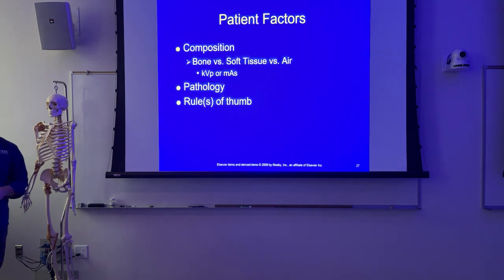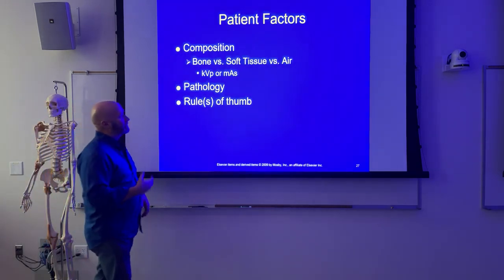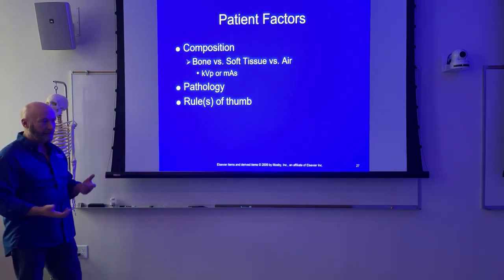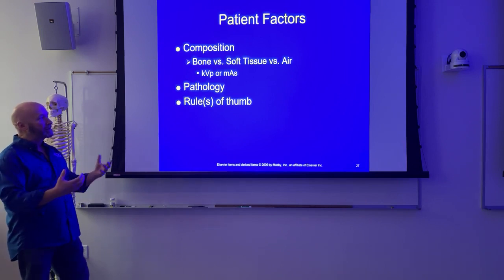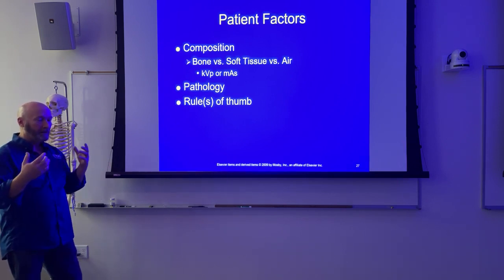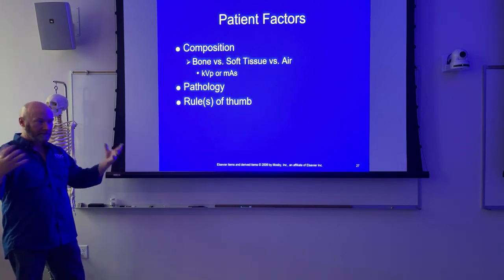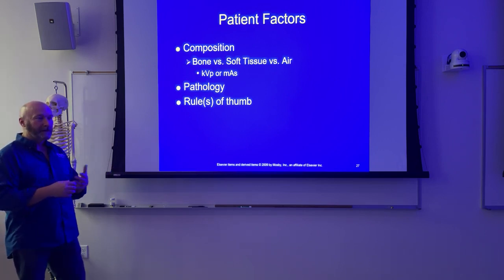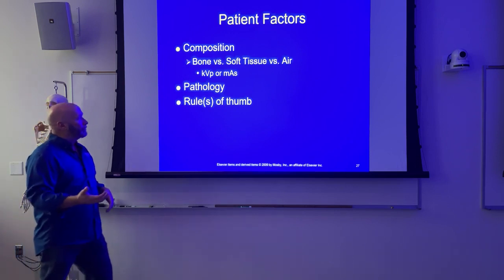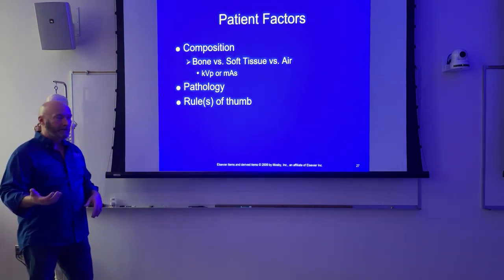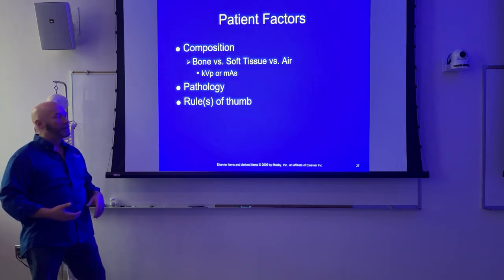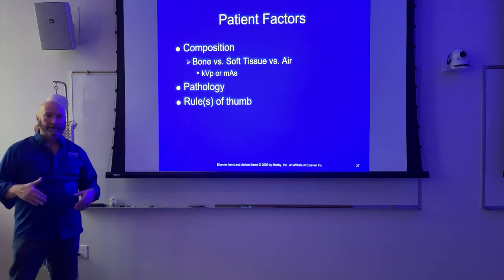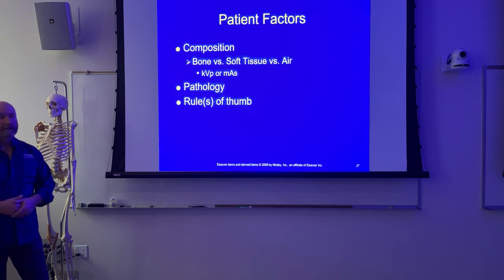If we have an increase in bone, we might want to increase KVP; but if we have an increase in soft tissue, we probably want to increase mAs. If we have an increase in air, on the other hand, we might need to decrease our technique. Increase KVP for osteopetrosis; decrease KVP for osteoporosis. You may see those questions all the way through the registry: marked increase in tissue density - increase KVP; marked decrease in tissue density - decrease KVP, as opposed to changing mAs. But pretty much everything else, the technical factor of choice is changes in mAs.